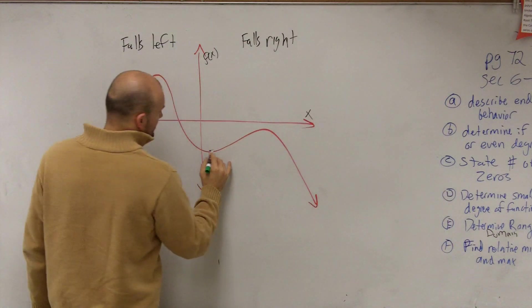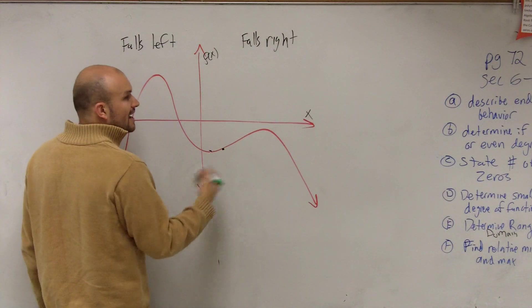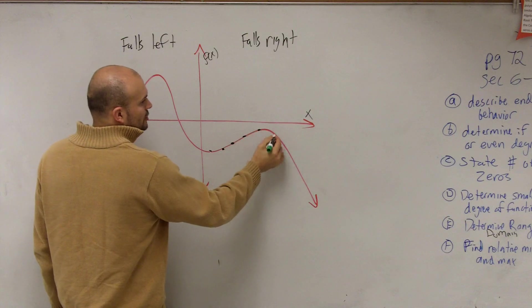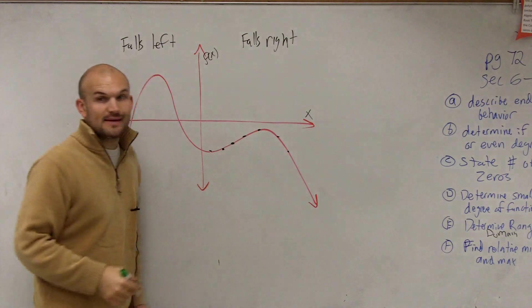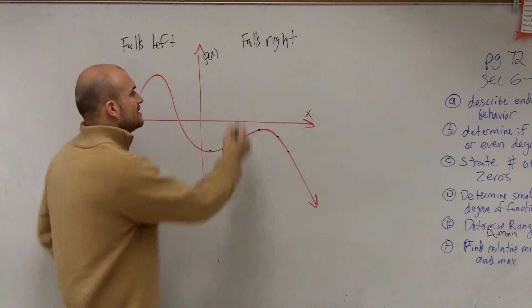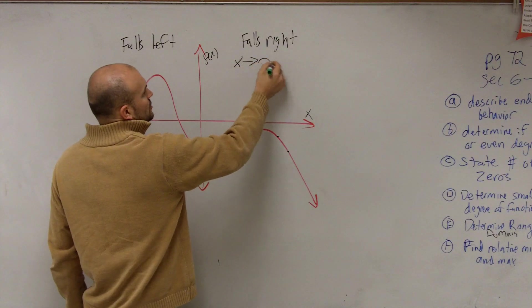So what we notice is, as my points, remember, each point has an x and an f of x point. As my points go to the right, they're going to keep on going to the right until they go to infinity. So as x goes to infinity,